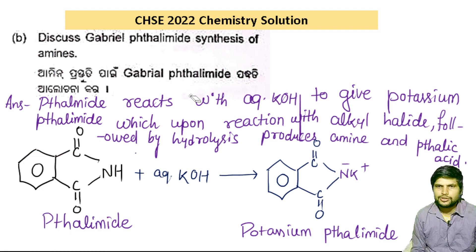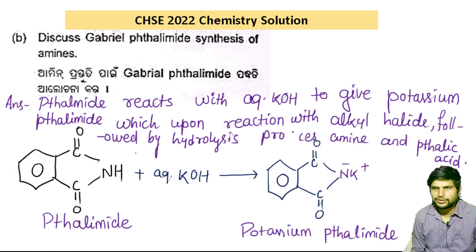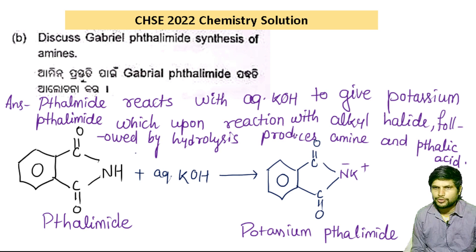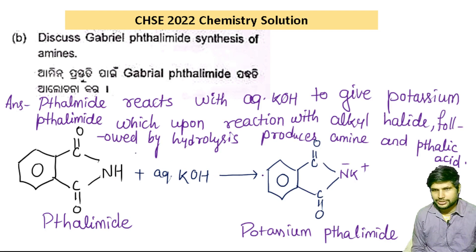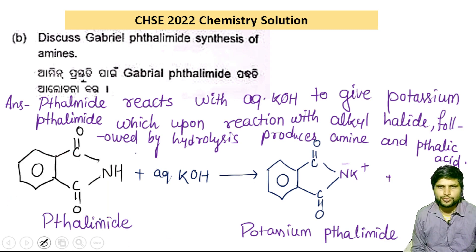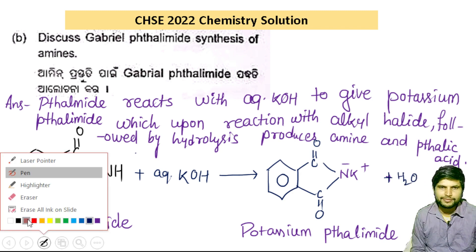This is a very important reaction. Phthalimide reacts with aqueous KOH to give potassium phthalimide. When you treat phthalimide with aqueous KOH, we will get the corresponding potassium phthalimide and water.